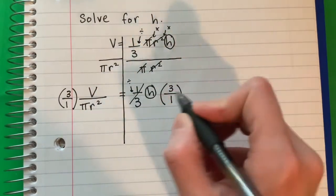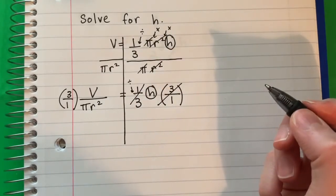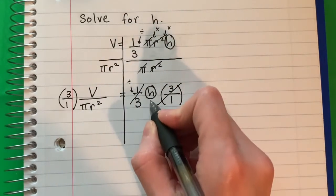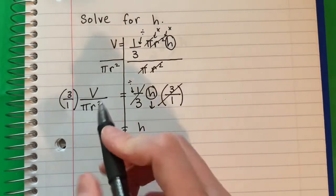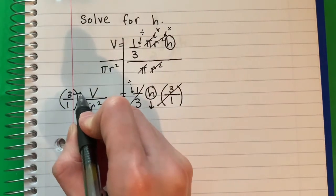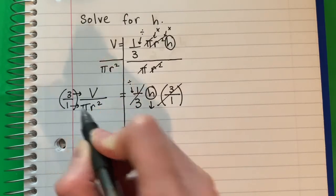The 1/3 times the 3 divided by 1 cancels. So I'm going to bring down that h equals. And I'm going to multiply this. How you multiply this is you just multiply the top with the top and the bottom with the bottom.